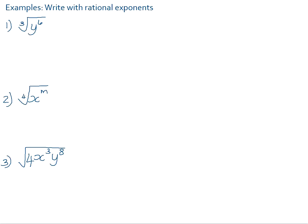Let's have a look at a few more examples. Number one: write with a rational exponent — the cube root of y to the power of 6. We know that we've got to divide the exponent by the type of root in order to get it as a rational exponent. 6 over 3 simplifies, and it becomes y squared. Number two: the fourth root of x to the power of m becomes x to the power of m over 4. The exponent becomes the numerator in the rational exponent, and the type of root becomes the denominator. Number three: the square root of 4x cubed y to the power of 8. The square root of 4 can be found — it's 2. The square root of x cubed gives x to the power of 3 over 2, since 3 over 2 doesn't simplify. And y to the power of 8 divided by 2 is y to the power of 4.